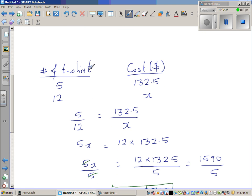Say you got five t-shirts. Five t-shirts cost 132.5, so the question is: 12 t-shirts cost how much? This is an example of ratio and proportion. This ratio is equal to this ratio, so I can say 5 over 12 is equal to 132 over x. Then you can cross multiply.